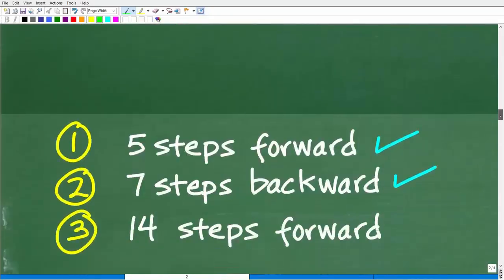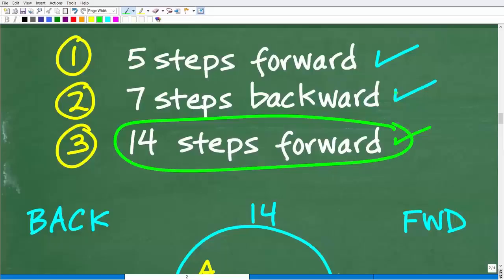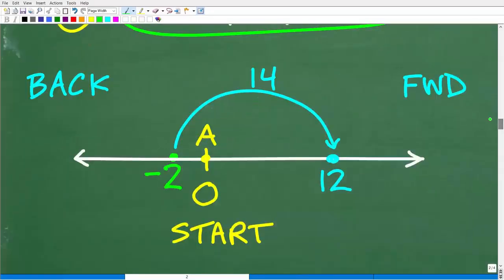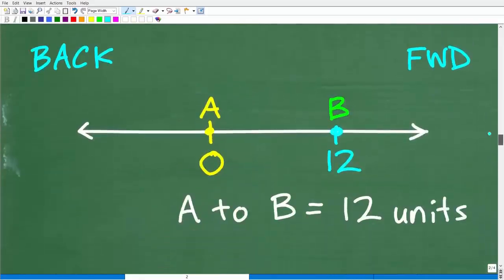The last thing we need to do is take 14 steps forward, starting from where we left off after the seven steps — which is at negative two. Going forward from negative two, we go two steps to reach zero, which means we have 12 more steps remaining in our 14, and that lands us at positive 12. We don't have any more steps to take. So the distance between A and B — point B is where our last steps finished — is 12 units.